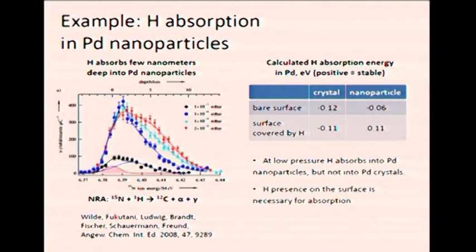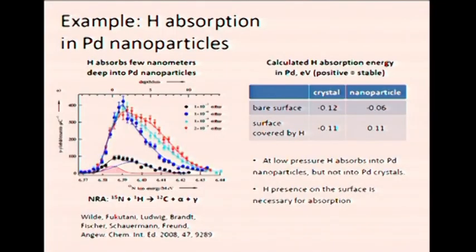As an example of what we are doing: there were experiments where they saw that hydrogen absorbs a few nanometers deep into palladium nanoparticles but does not absorb into palladium single crystals at these pressures. To do this experiment, it was sufficient to irradiate samples with nuclei of nitrogen, cause a nuclear reaction, and collect the emerging gamma radiation. We calculated hydrogen absorption energies in crystals and nanoparticles of palladium. In crystals these energies are negative, meaning absorption won't happen at low pressures. In nanoparticles with bare surface they are also negative, but when there is hydrogen covering the surface, absorption energy becomes positive, making the process possible at low pressures. So not only did we reproduce the results of this quite complicated experiment, we also gained new insight into the processes in this system.